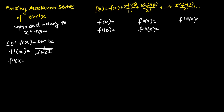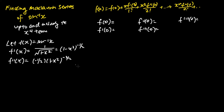Next, we differentiate the function one more time to get f''(x). Since f'(x) is just 1 minus x squared to the power of negative one half, applying the chain rule we get negative one half times 1 minus x squared to the power of negative 3 over 2, and then we differentiate the inside, which is 1 minus x squared, giving negative 2x. Simplifying, we get f''(x) equals x times 1 minus x squared to the power of negative 3 over 2.